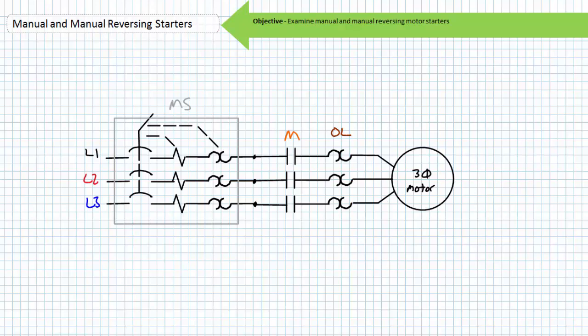In conclusion, this lecture took a brief look at manual motor starters. We discussed manual and manual reversing motor starters using a drum or rotary cam switch. Additionally, we saw that a manual motor starter can be used to functionally isolate a motor remotely operated via a magnetic motor starter.